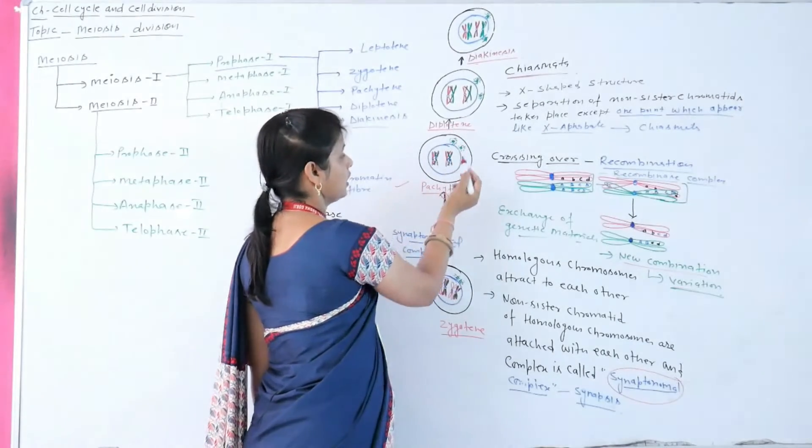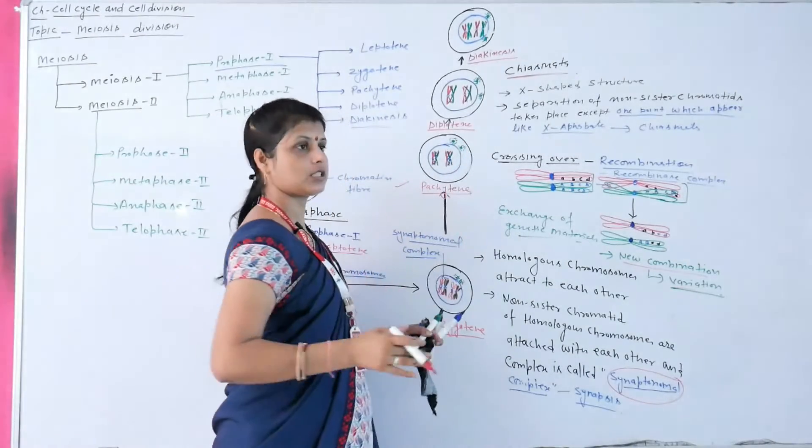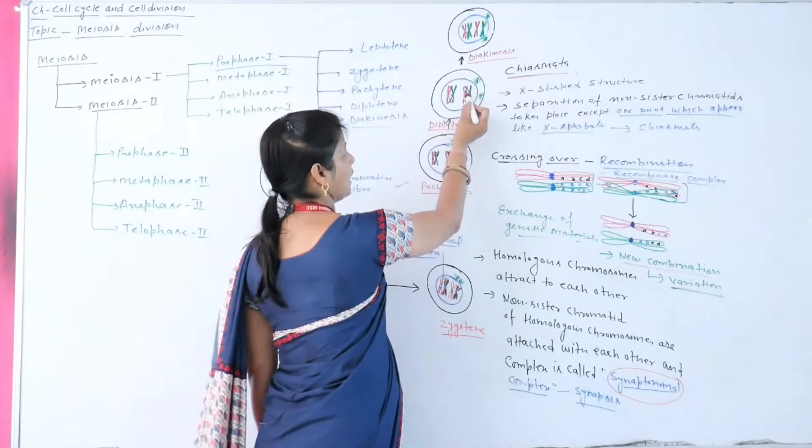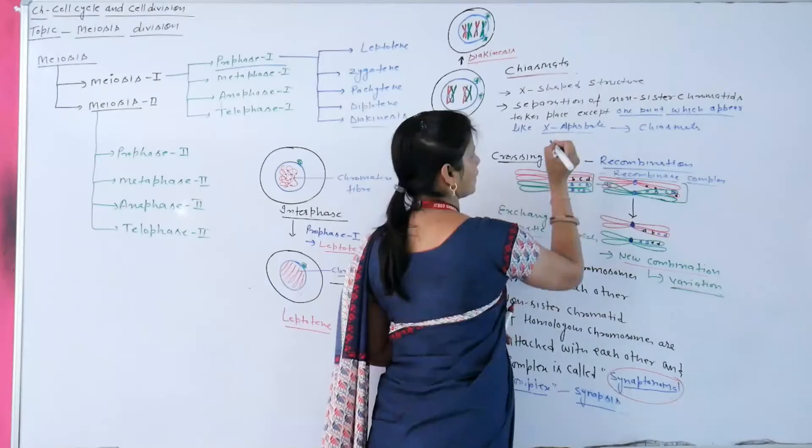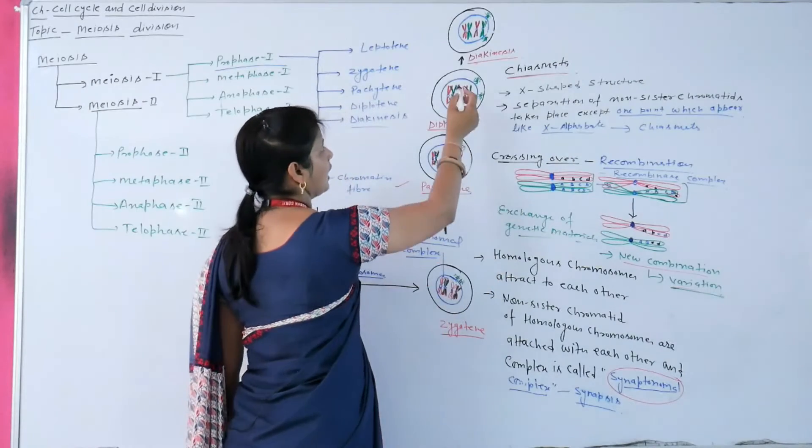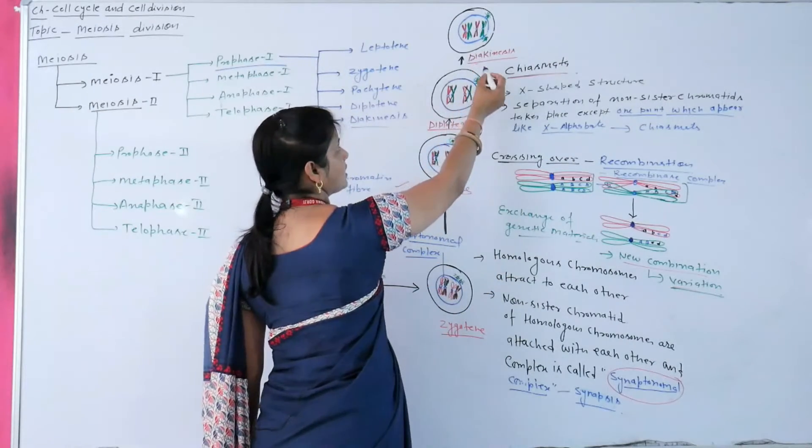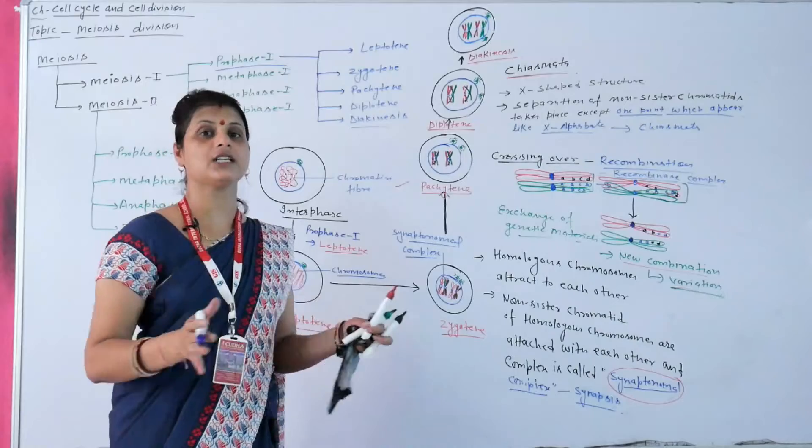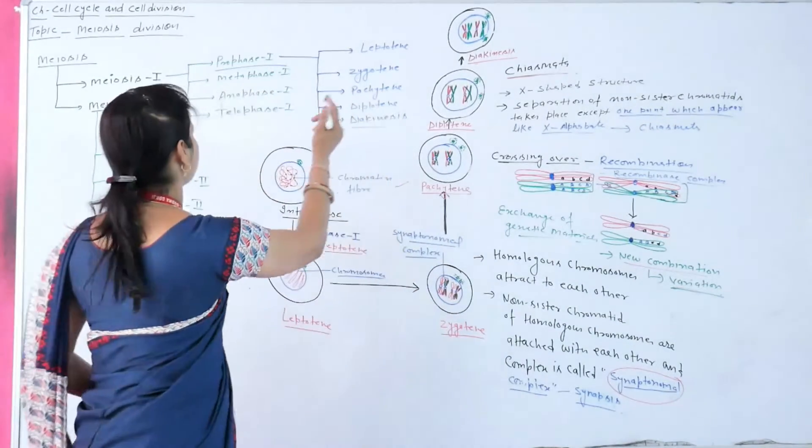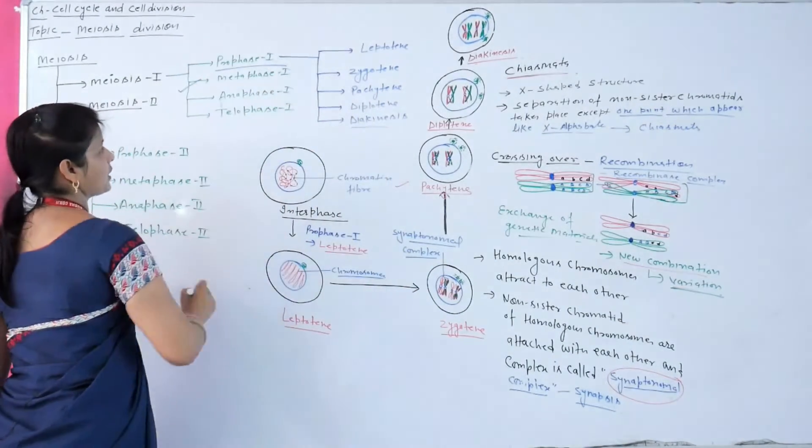The next stage is called diplotene. During diplotene stage, non-sister chromatids are separated except at a point. This point appears like an X-shaped structure called chiasma. The next stage is diakinesis. During diakinesis, homologous chromosomes completely separate from each other, leading to the next stage known as metaphase I.